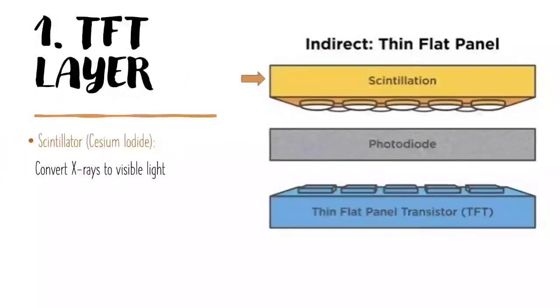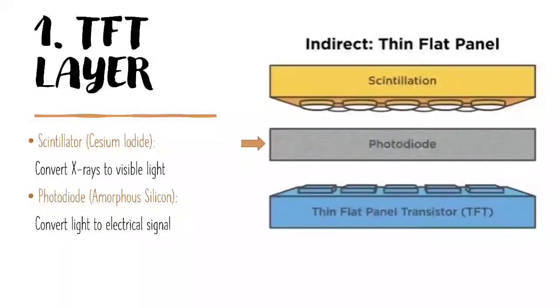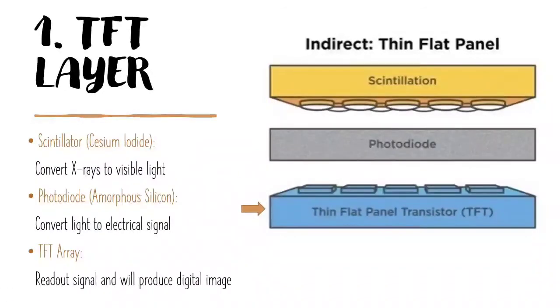Next is the TFT layer. The first layer is the scintillator, made of cesium iodide, and its function is to convert x-ray to visible light. The next layer is the photodiode, which consists of amorphous silicon and converts light to electrical signal. The last one is the thin film transistor, or TFT, whose function is to read out the signal and produce a digital image.